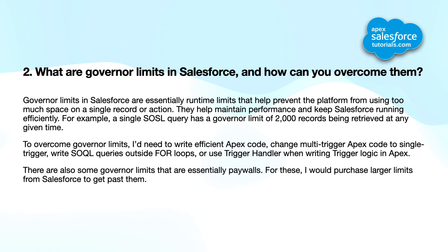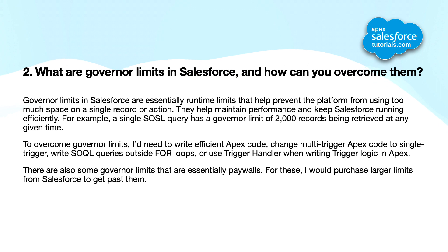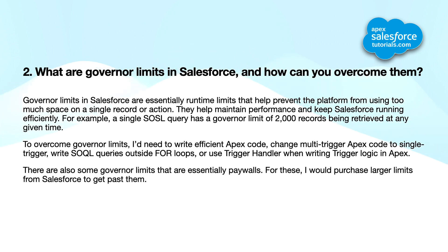Second question: what are governor limits in Salesforce and how can you overcome them? Governor limits in Salesforce are runtime limits that help prevent the platform from using too much space on a single record or action. They help maintain performance and keep Salesforce running efficiently. For example, a SOQL query has a governor limit of 2000 records being retrieved at any given time. To overcome governor limits, write efficient Apex code.